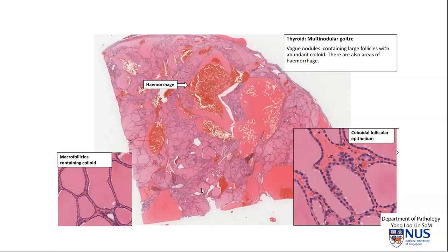So we have different follicles. Some of them are more hyperplastic, some of them are more involuted, with more atrophied or flattened epithelium, because they are undergoing hyperplasia and involution at different rates, and this is why the gland grossly has a nodular appearance.